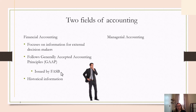Financial accounting is based on historical information — things that have already happened, sales that have already happened, expenses that have already happened. You're putting them into the system, categorizing them, inputting them, and then producing reports based on these things that have already happened.